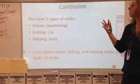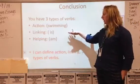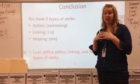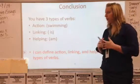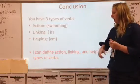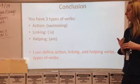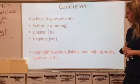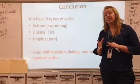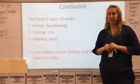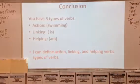Alright, so in conclusion, you have three types of verbs that we learned about today. We have action, which is like swimming. Linking, which would be like the word is — it helps link our sentence together. And helping helps the verb out — they are best friends forever and they help each other out. Your I can statement by the end of this lesson was: I can define action, linking, and helping verbs. If you don't think you can do that right now, I encourage you to pause, go back a little bit, and make sure you get that. If you feel really confident, then you're good to go. Thank you very much.